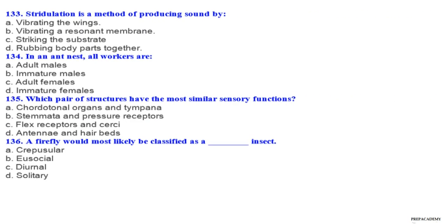Question 133. Stridulation is a method of producing sound by: A vibrating the wings, B vibrating a resonant membrane, C striking the substrate, D rubbing body parts together. Question 134. In an ant nest, all workers are: A adult males, B immature males, C adult females, D immature females. Question 135. Which pair of structures have the most similar sensory functions? A chordotonal organs and tympana, B sternites and pressure receptors, C stretch receptors and cerci, D antennae and hair beds.